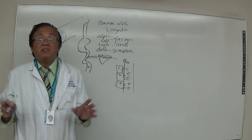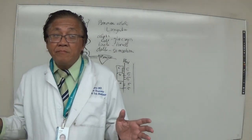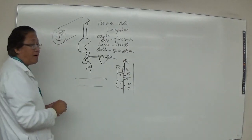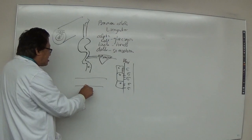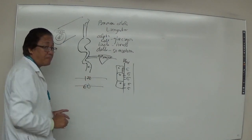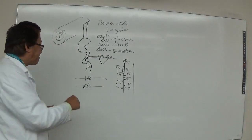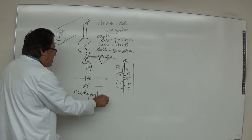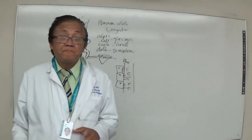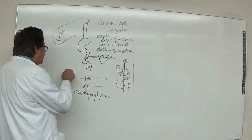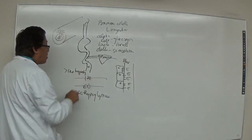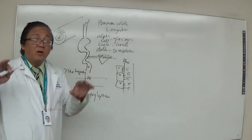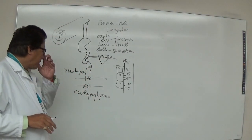The normal blood glucose levels range between 60 to 120. Anything below 60 would be hypoglycemia — hypo means low, glycemia means blood sugar. Anything above 120 would be hyperglycemia. This ballpark figure of 60 to 120 is easier to remember.